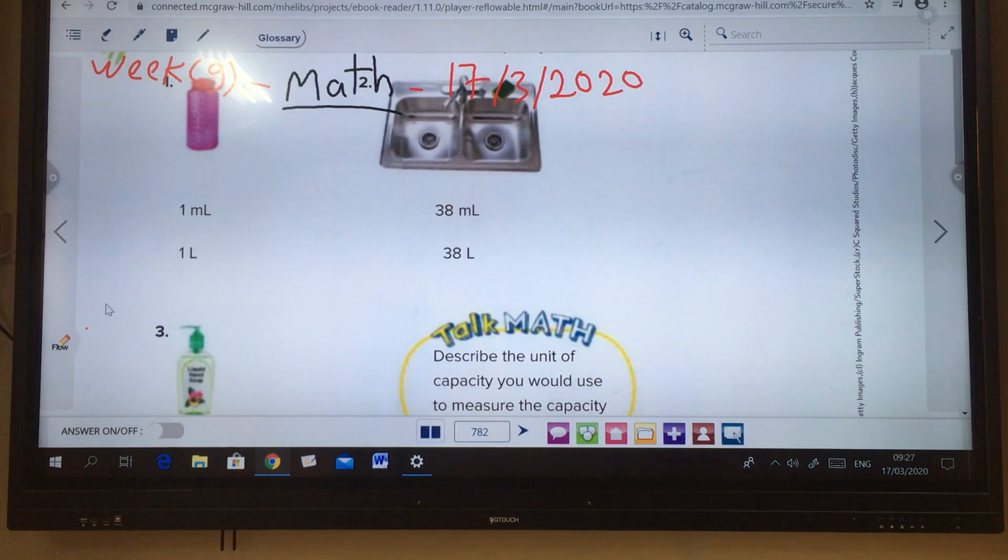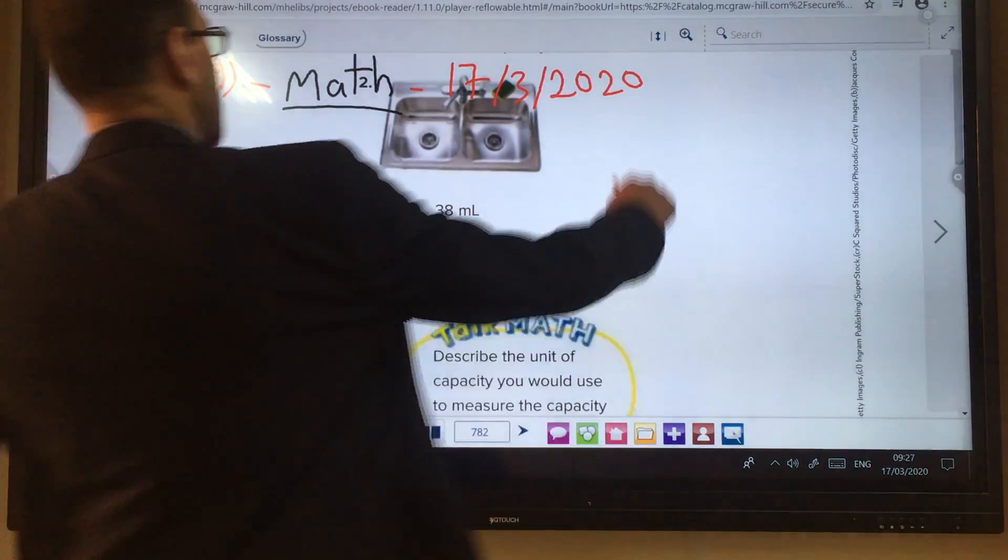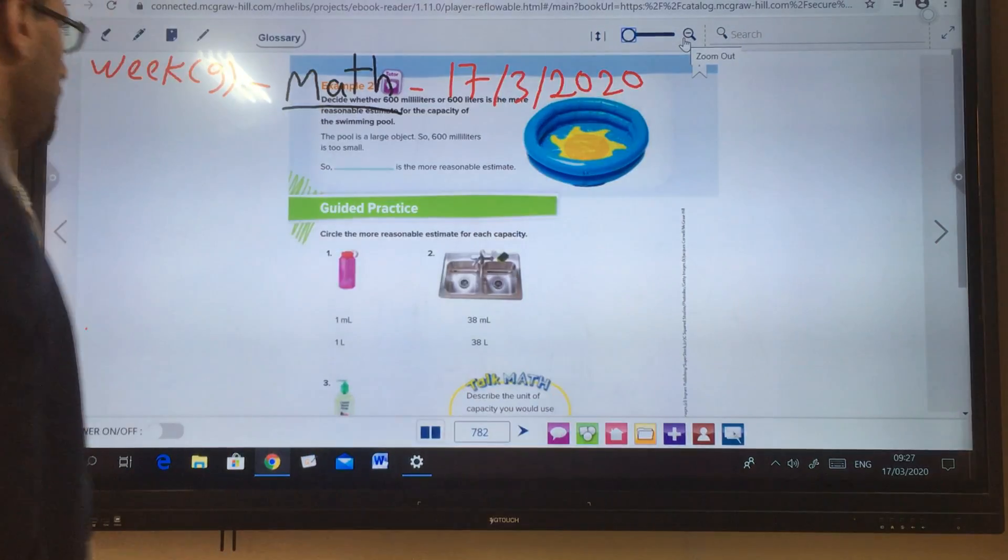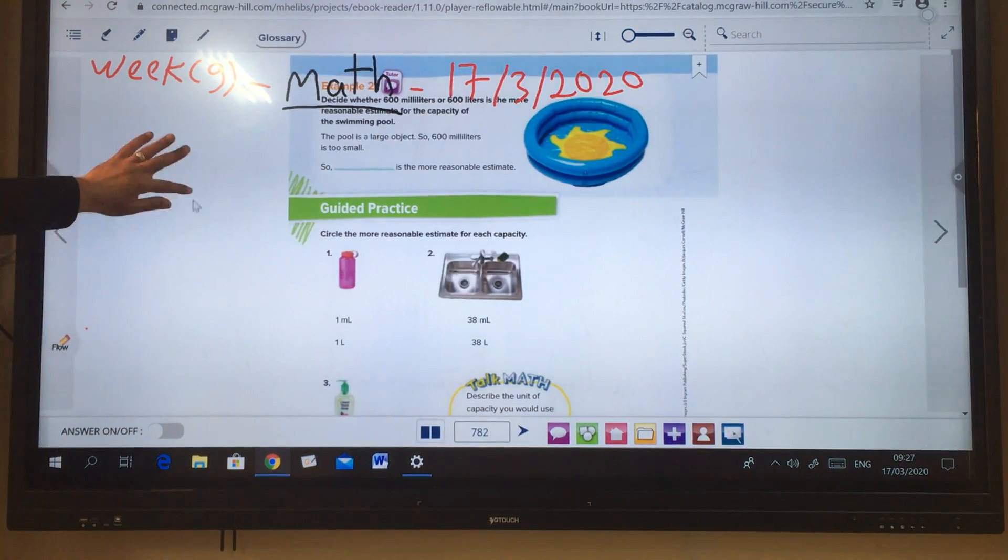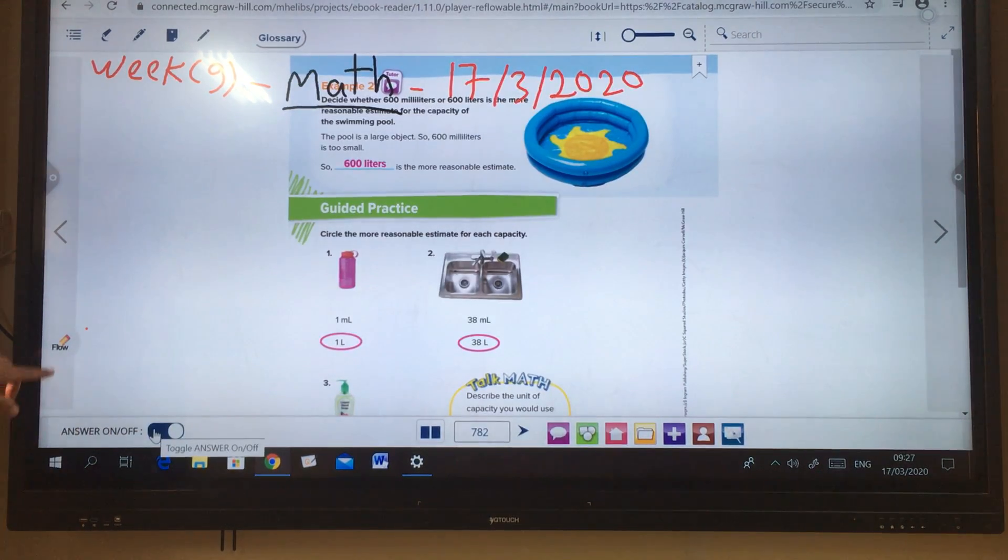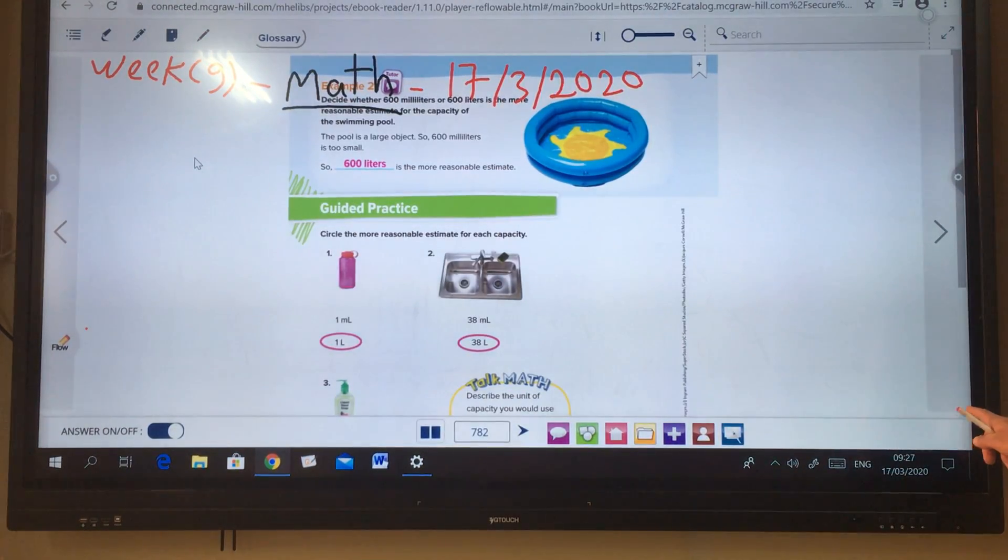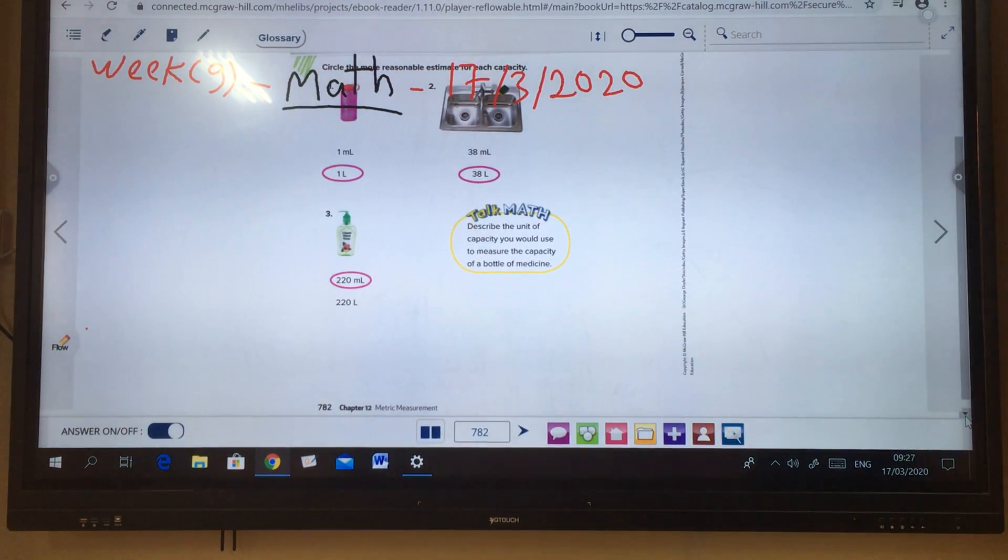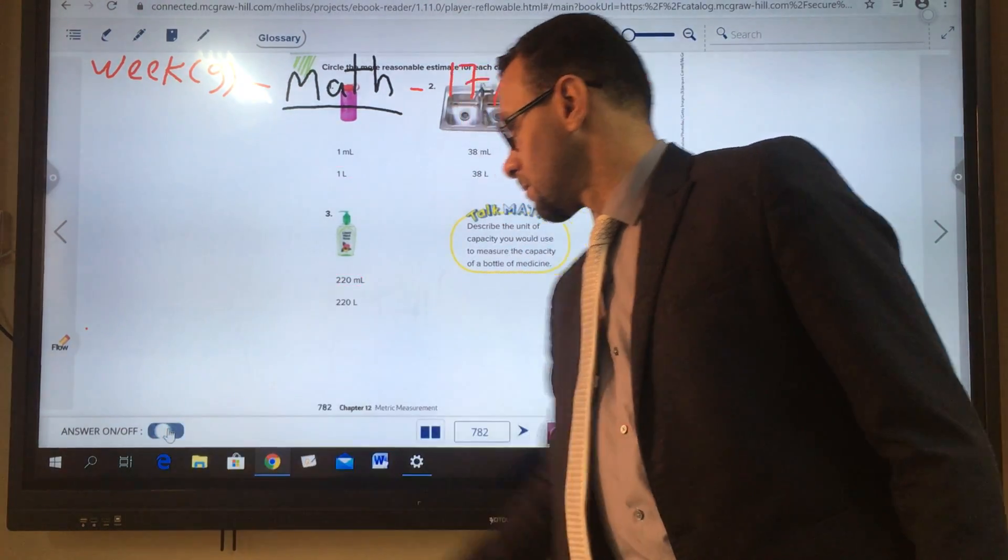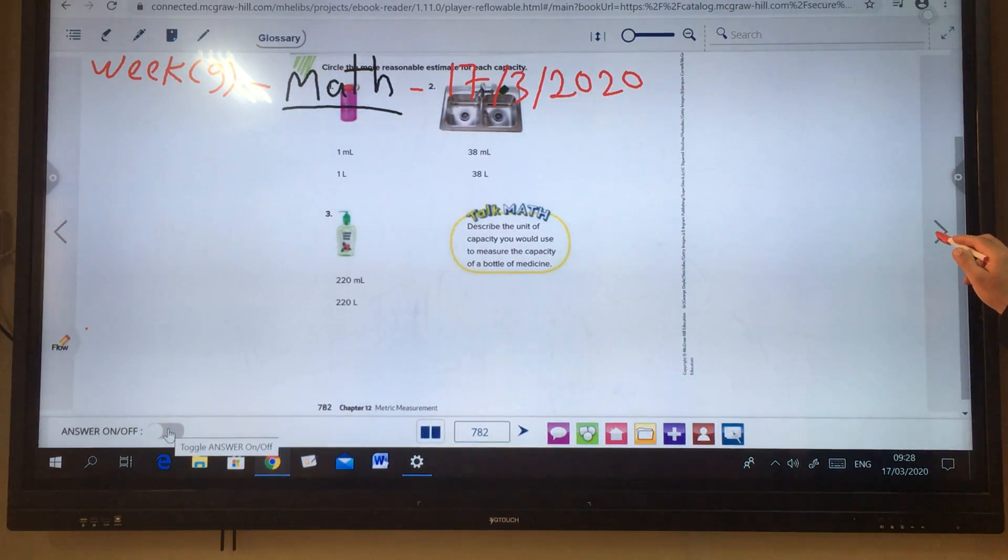Yes, for the potter it is one liter. Look. And number two, yes, 38 liter. And then number three is about 220 milliliter. You see here, number one is yes one liter, number two is 38 liter, number three we use 220 milliliter. Good. Next page, page number 783.